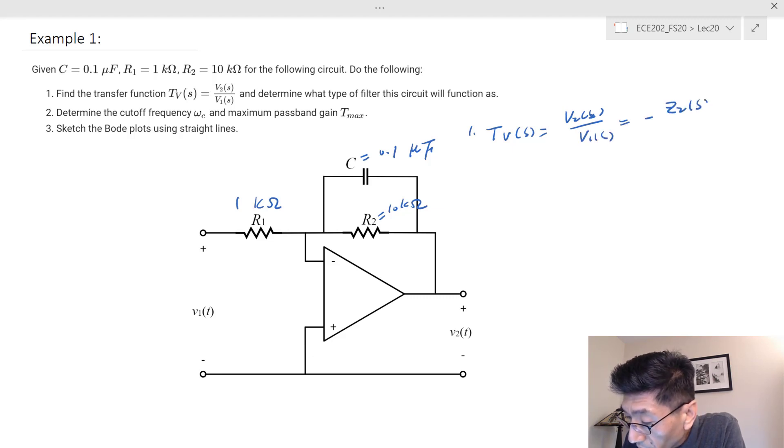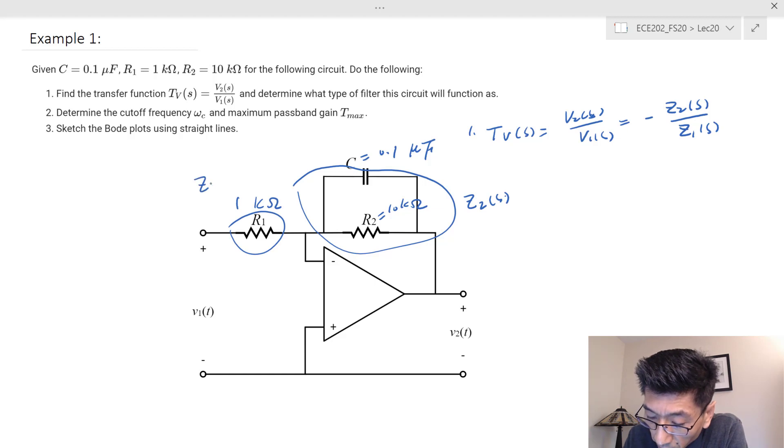We have the parallel impedances, so this will become Z2 and this will become Z1.